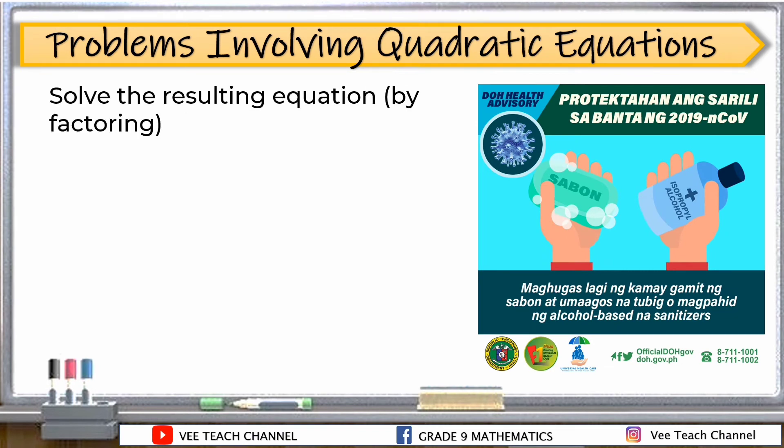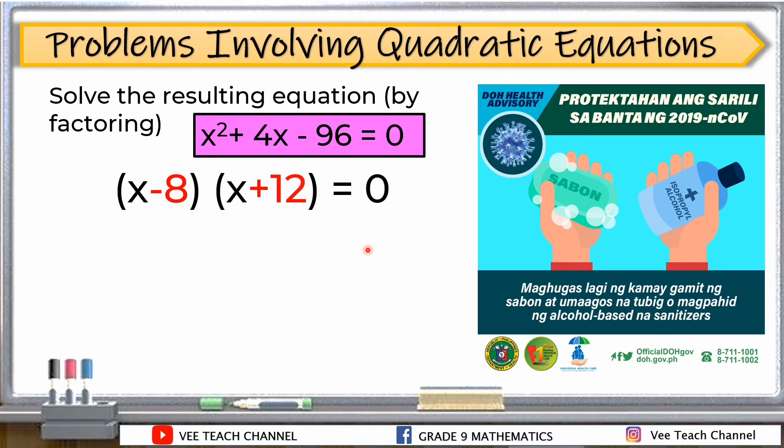Makikita na nga natin na yung ating equation ay equal na sa 0 at nakasulat na siya sa standard form. Ang susunod na gagawin natin is to solve the resulting equation by factoring yung gagamitin natin. Kasi mas madali ang factoring pag ganito. Pero kung gusto nyo yung quadratic formula, pwede rin naman. O kung gusto nyo rin completing the square, pwede rin naman. Pero factoring yung gamitin natin. Factor ng negative 96. Ang pinili natin is negative 8 and 12. Tapos syempre, huwag din natin kalimutang i-factor sa x squared. Kaya meron tayong x and x dyan. Ngayon, i-check natin kung talaga bang equal siya sa middle term. I-add nga natin negative 8 plus 12. Positive 4. Then copy, equal to 0.